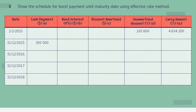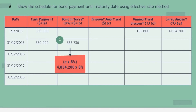For 1st January 2015, the cash payment is $350,000 per year and remains the same until maturity. The unamortized discount is $165,800 — the discount amount calculated previously. The carrying amount is the total issuance, which is the cash received from the previous calculation.